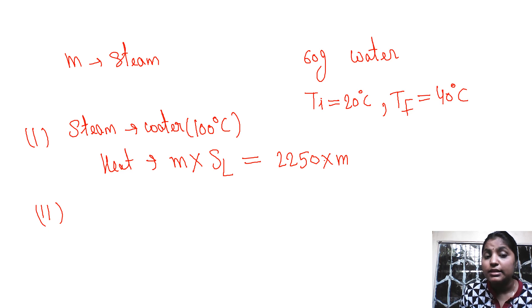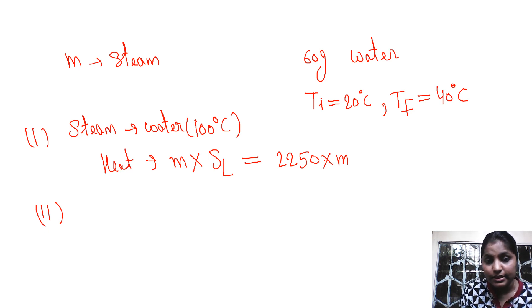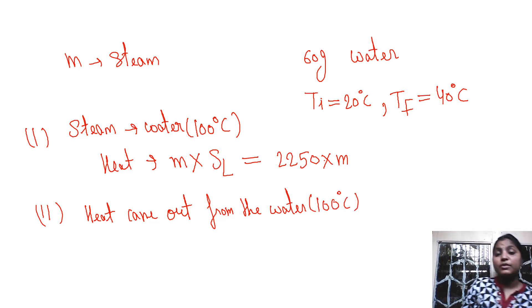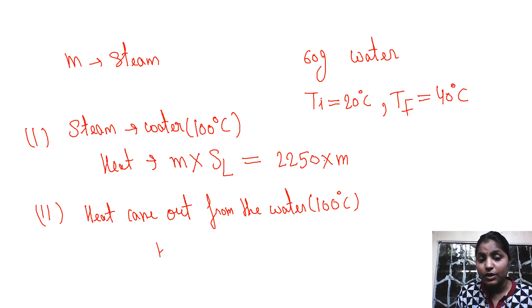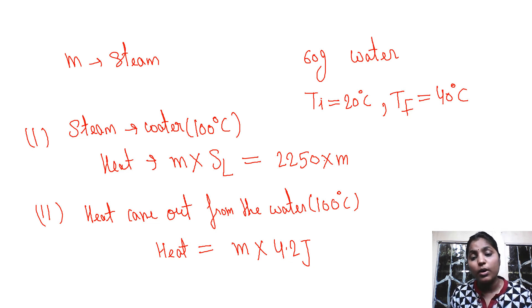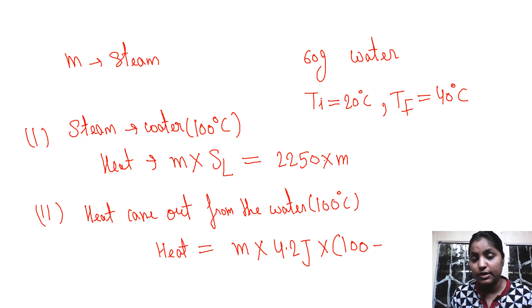In the second process, the water at 100 degrees centigrade will release heat. The heat released equals mass m into specific heat of water — that is, the heat required to raise the temperature of 1 gram of water by 1 degree centigrade — into the rise in temperature, which is 100 minus 40 degrees centigrade.